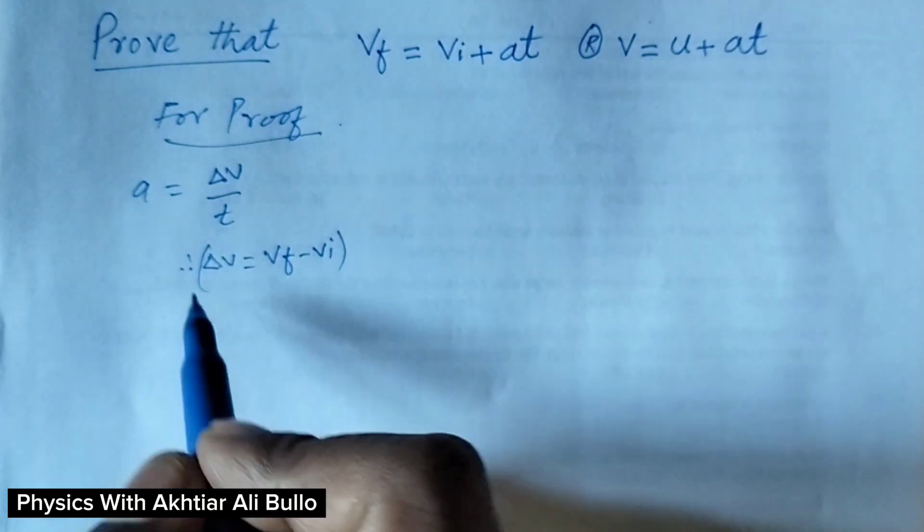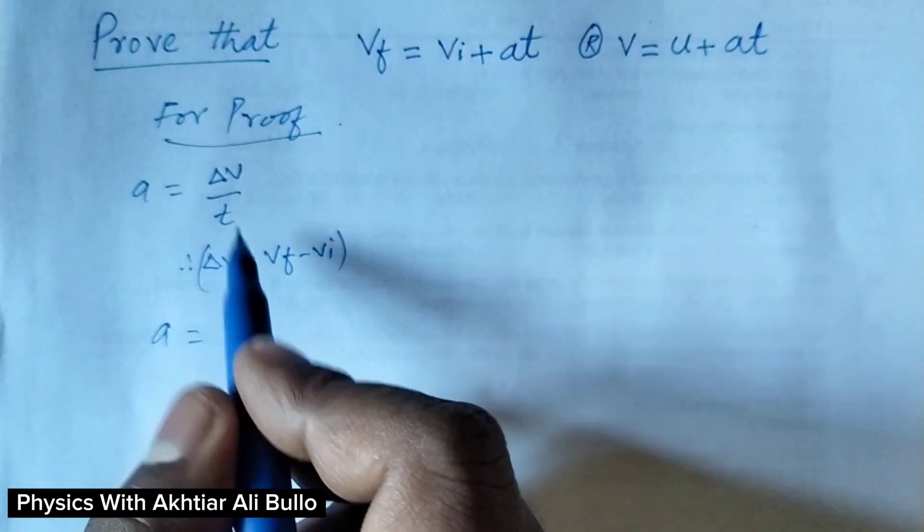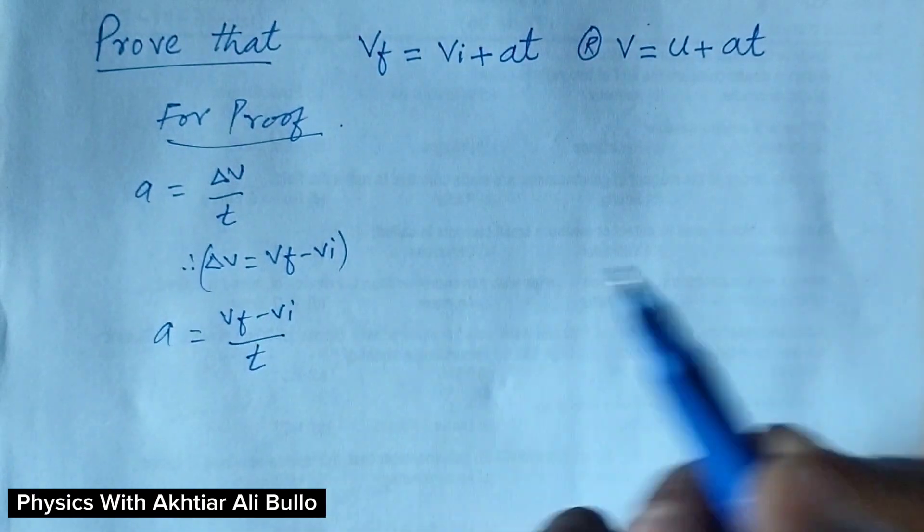So A will be equal to VF minus VI upon T.